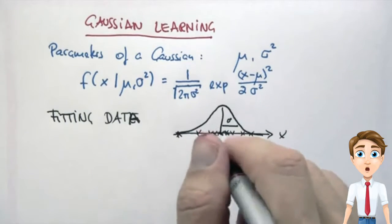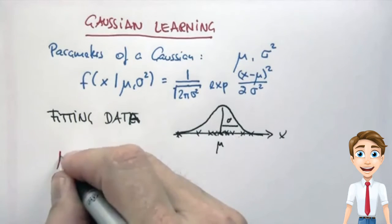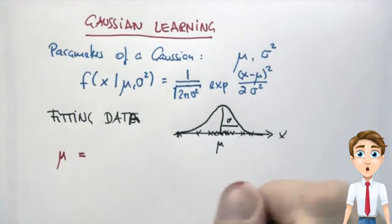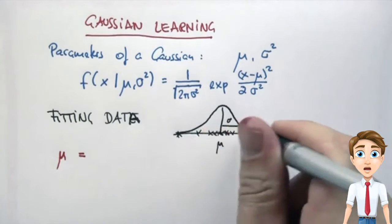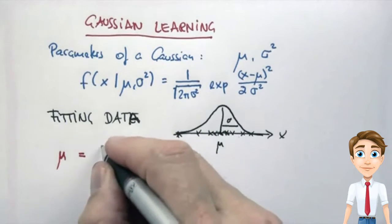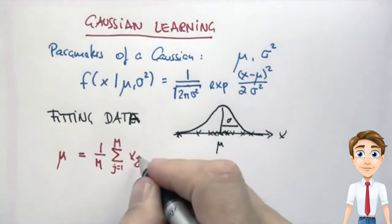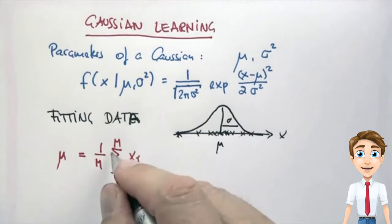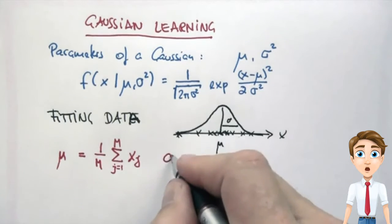There are really easy formulas for fitting data to Gaussians, and I'll give you the result right now. The optimal or most likely mean is just the average of the data points. So there's m data points, x1 to xm, the average will look like this: sum of all data points divided by the total number of data points.